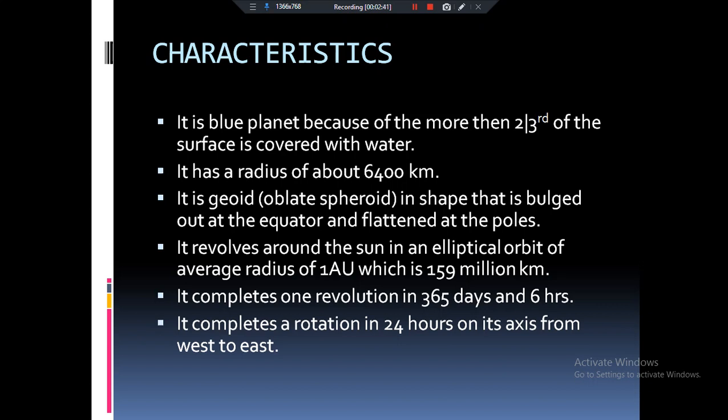As we know, the orbit of the earth is elliptical in shape but the average radius of that ellipse is equals to 150 million kilometers and that is equals to one astronomical unit. This distance is basically taken as the reference distance to calculate the distance of different planets from the sun.